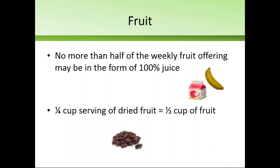If offering fruit juice, I recommend you also put out another type of fruit — such as canned, frozen, or fresh — in addition to that fruit juice, and then you will always be compliant with this requirement. With dried fruit such as raisins or craisins, a quarter cup serving of dried fruit is equivalent to a half cup serving.